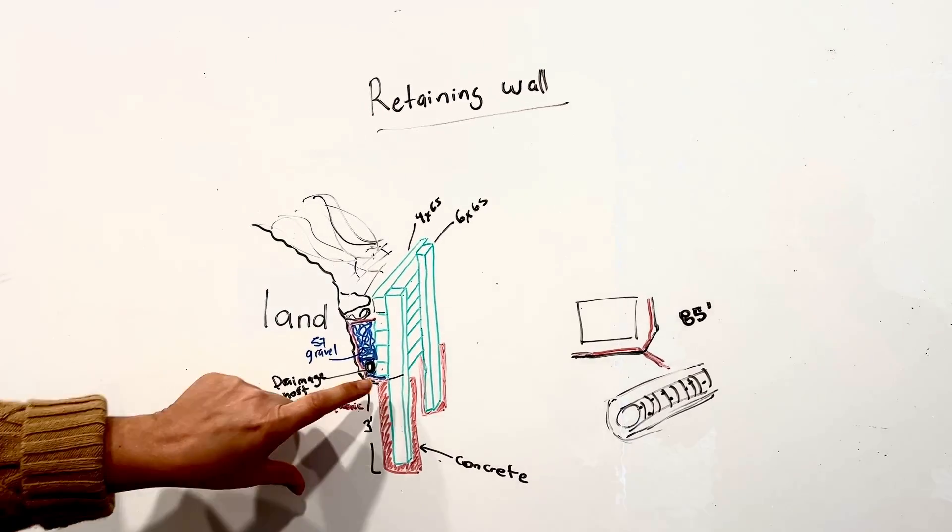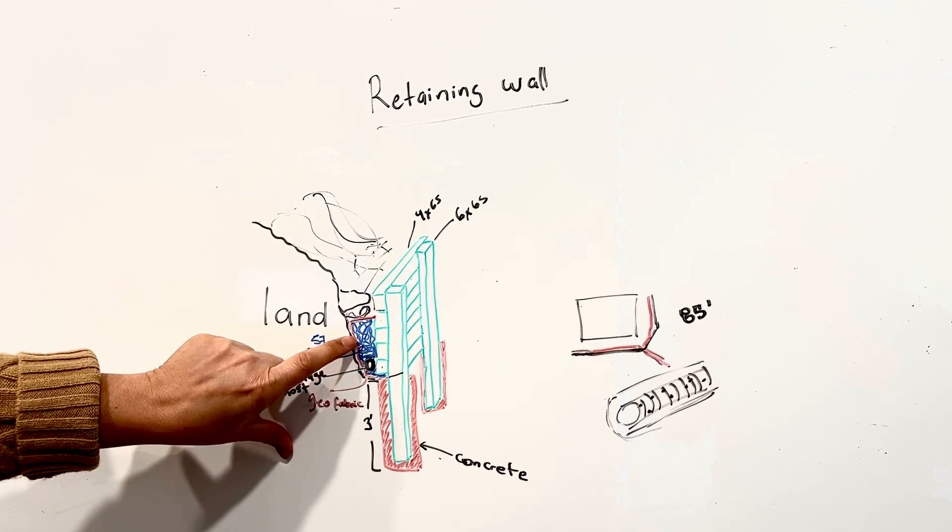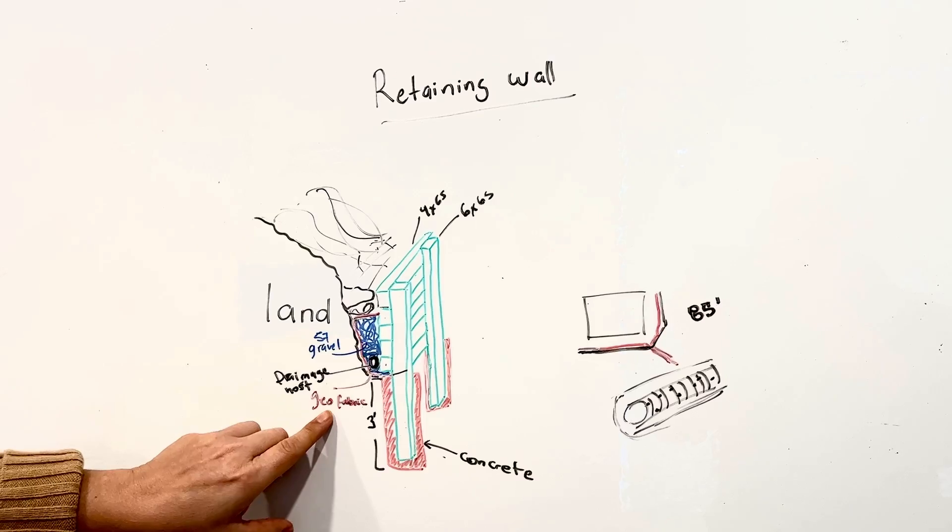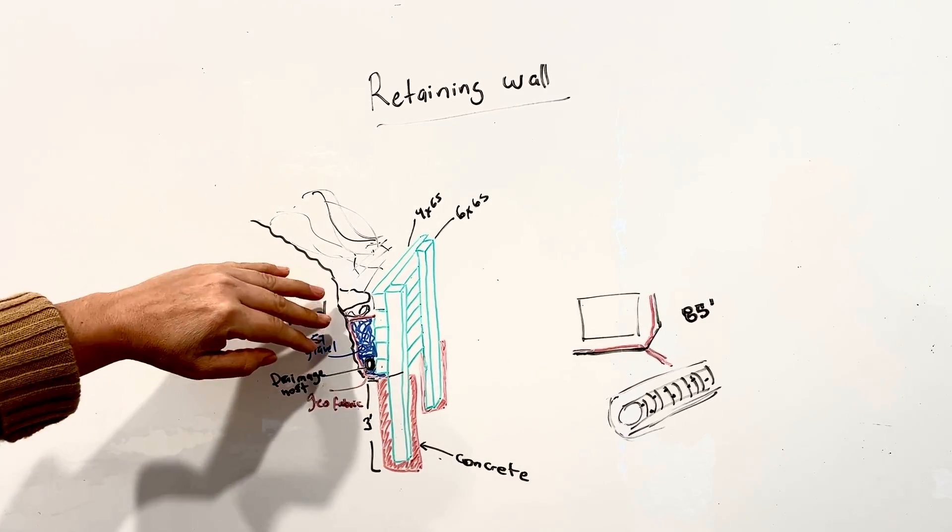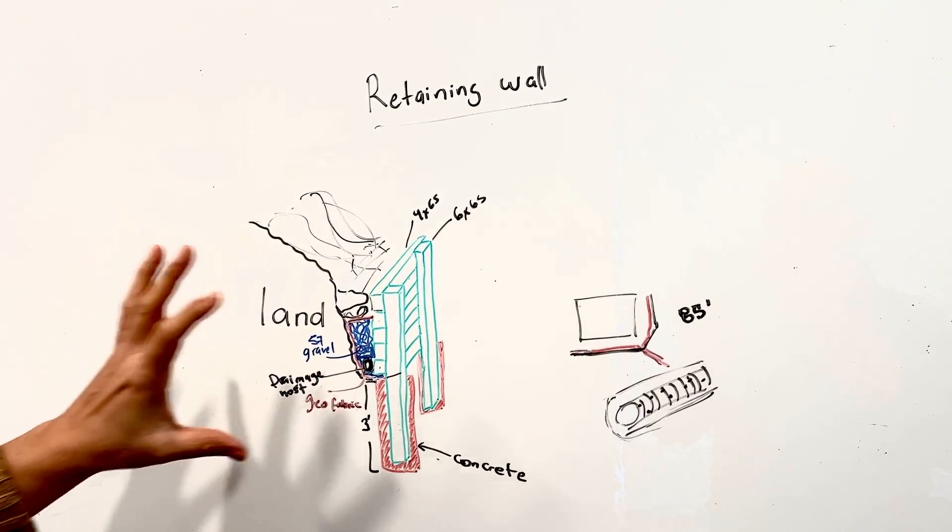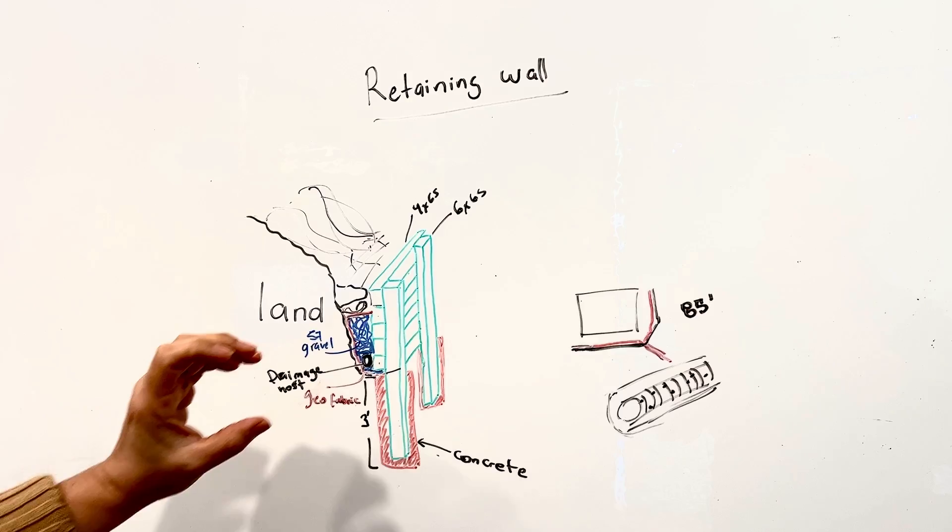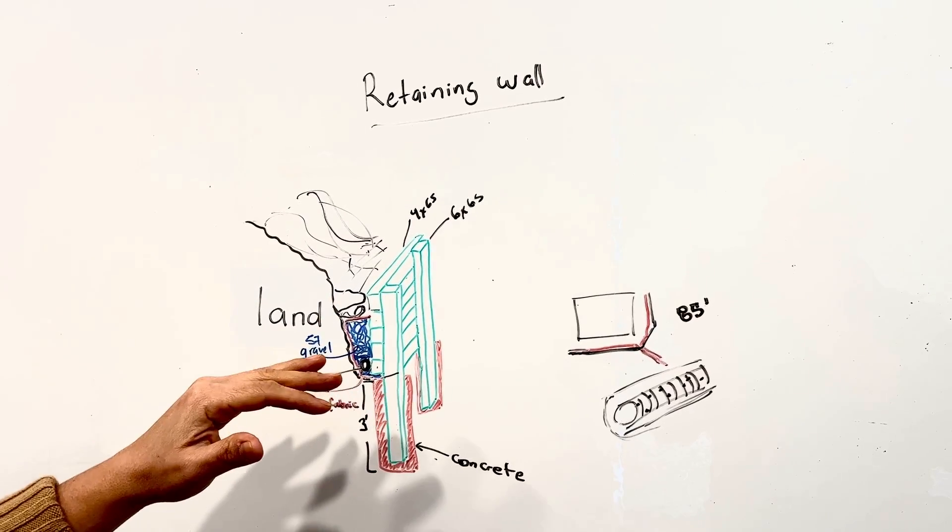So what you're seeing in red here is also something called geofabric. The geofabric protects the earth from going into the 57 drainage and affecting the drainage system.